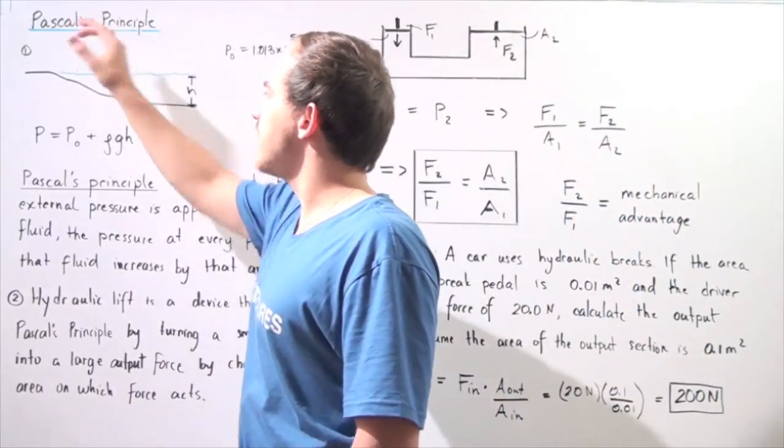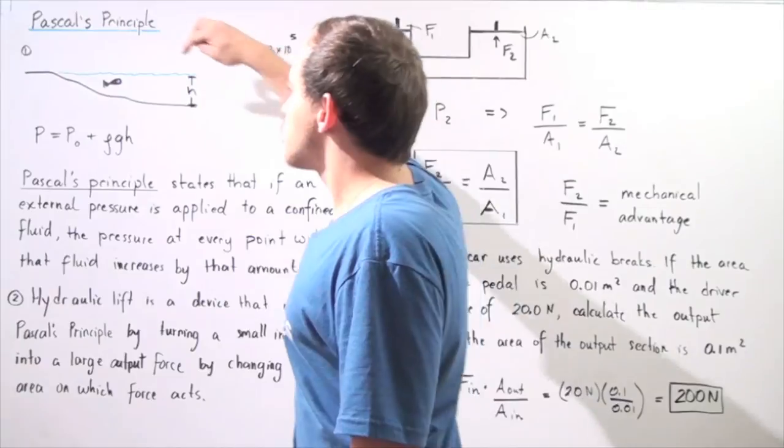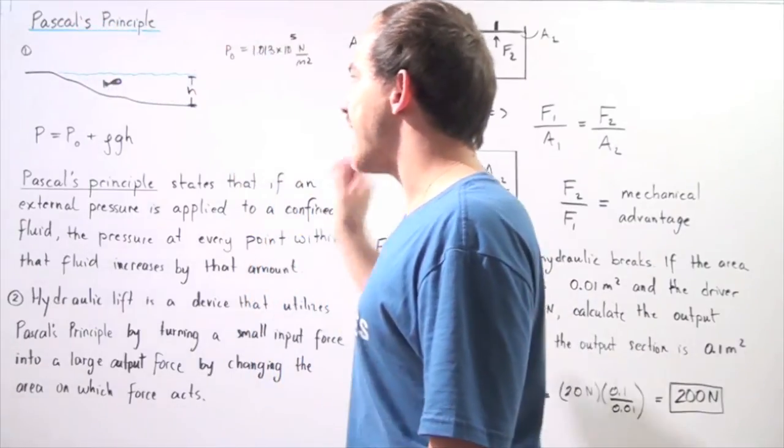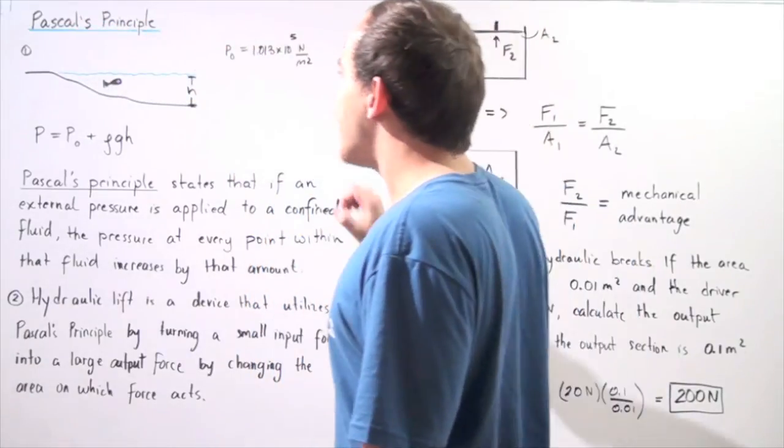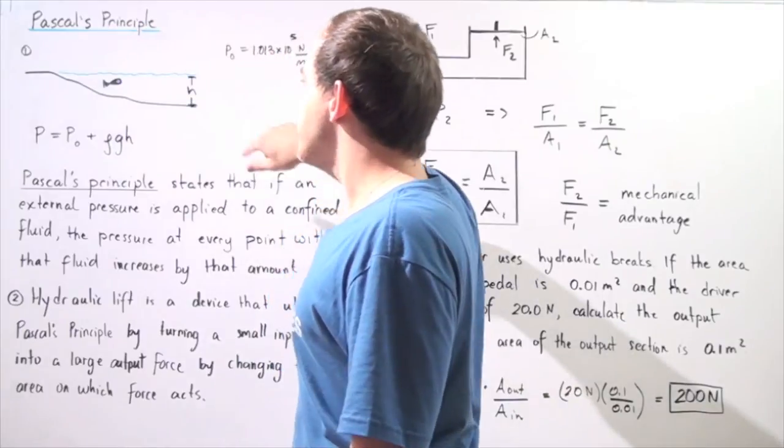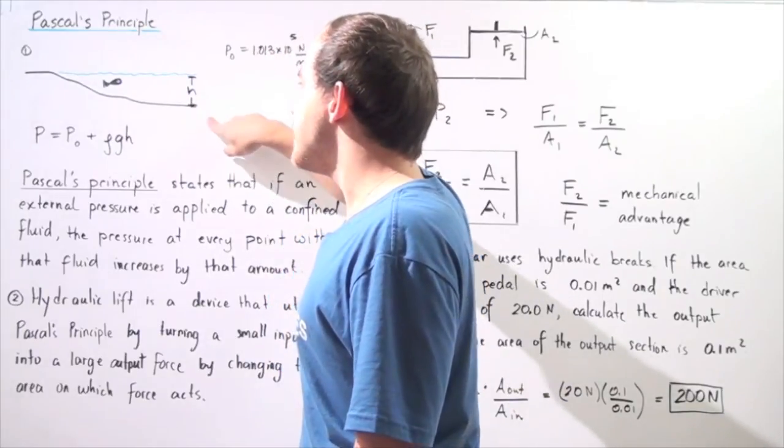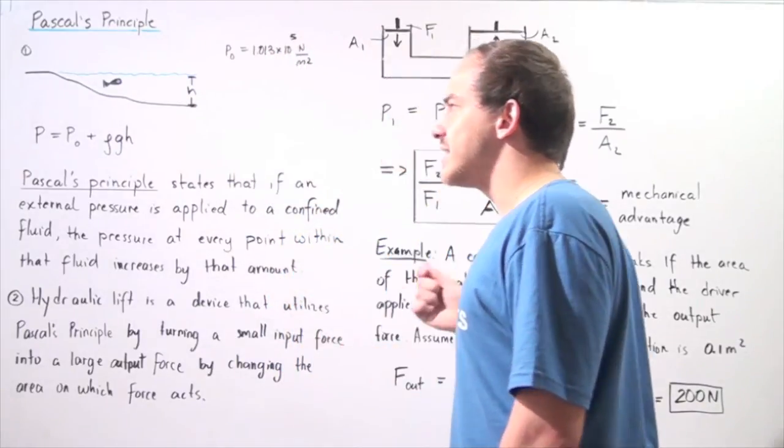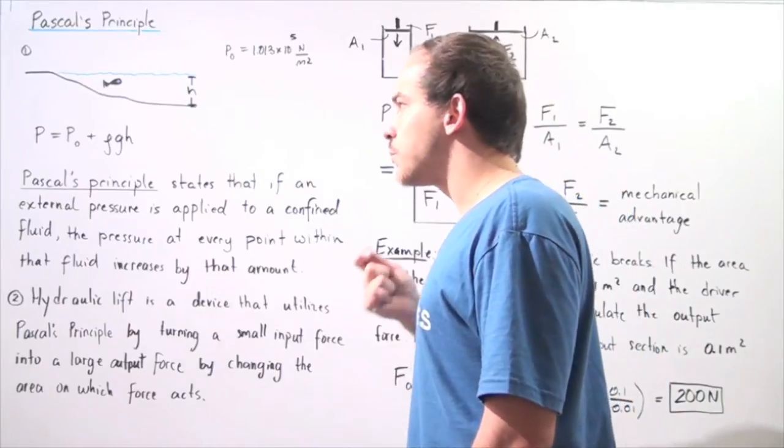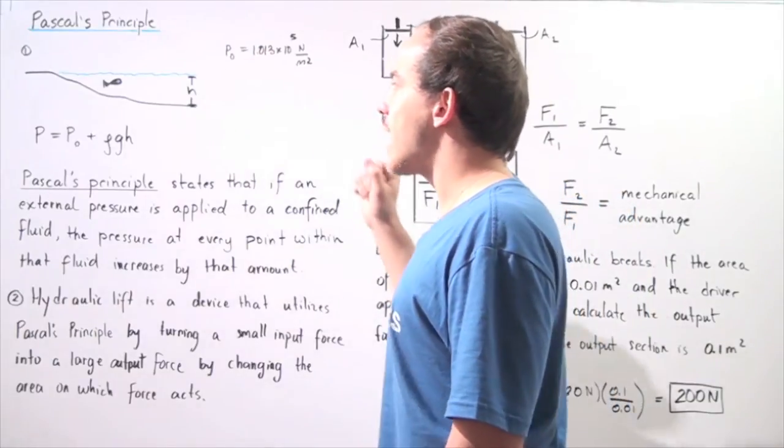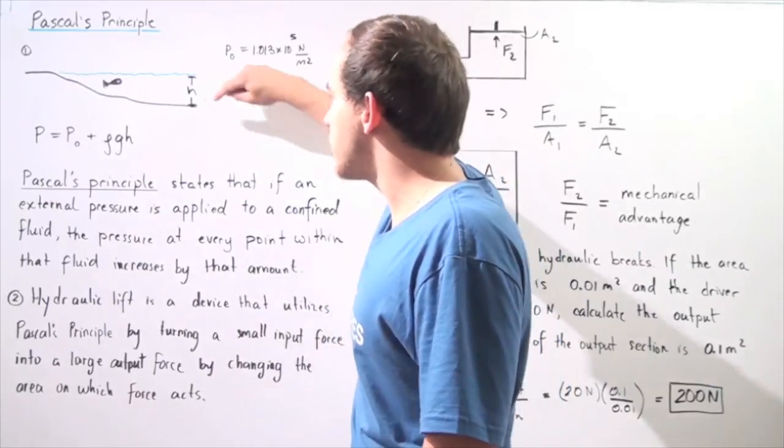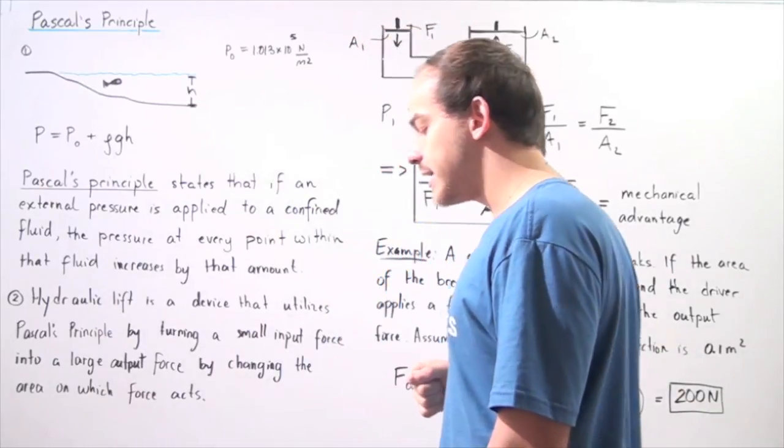Now let's suppose we examine the following lake. The surface of the lake is at sea level and the height from the surface of the lake to the bottom is h. Let's suppose we want to calculate the fluid pressure inside our lake at the bottom of the lake.